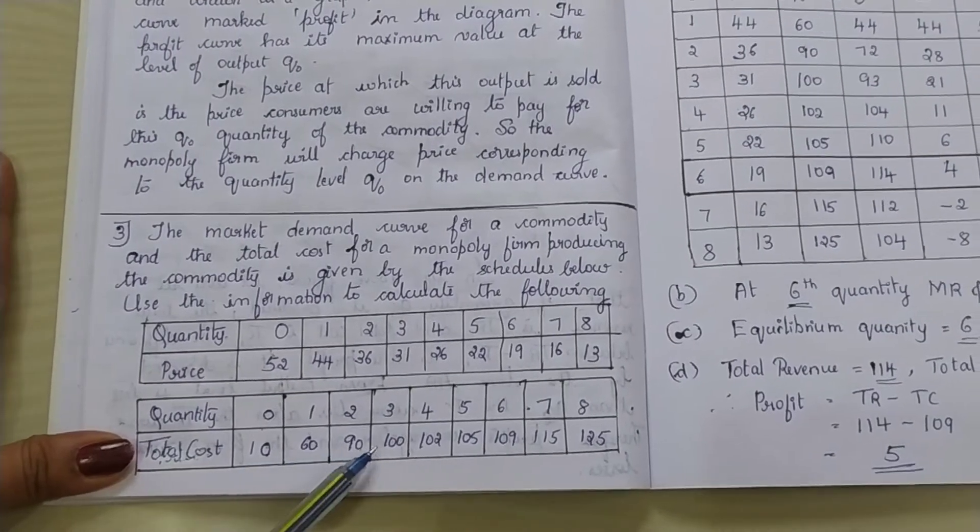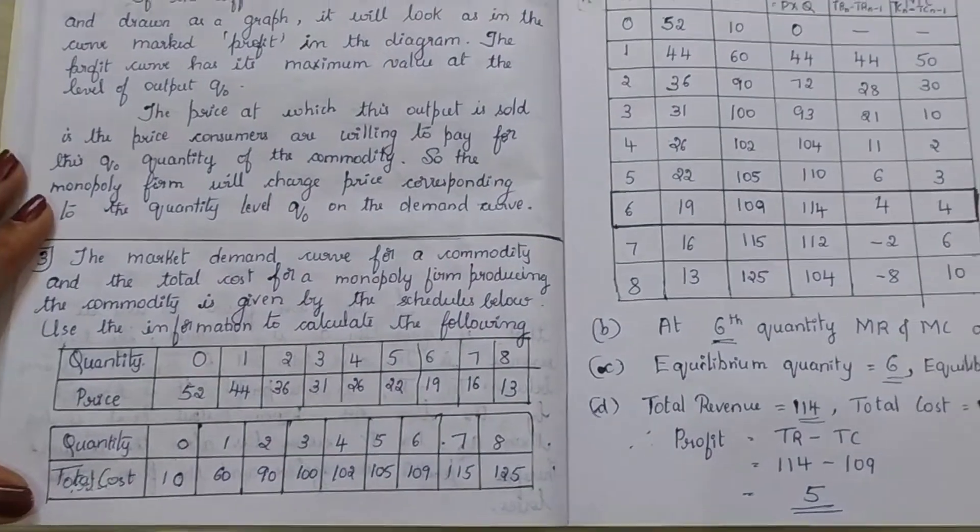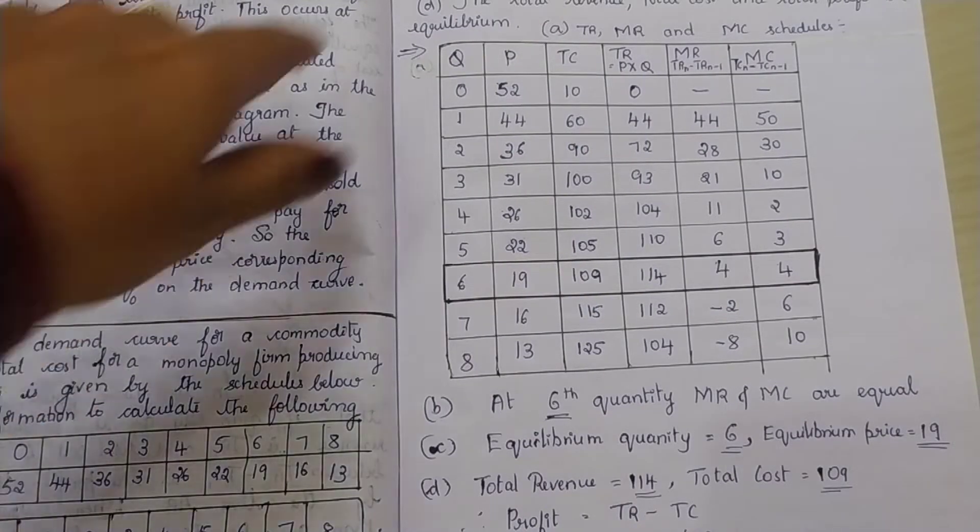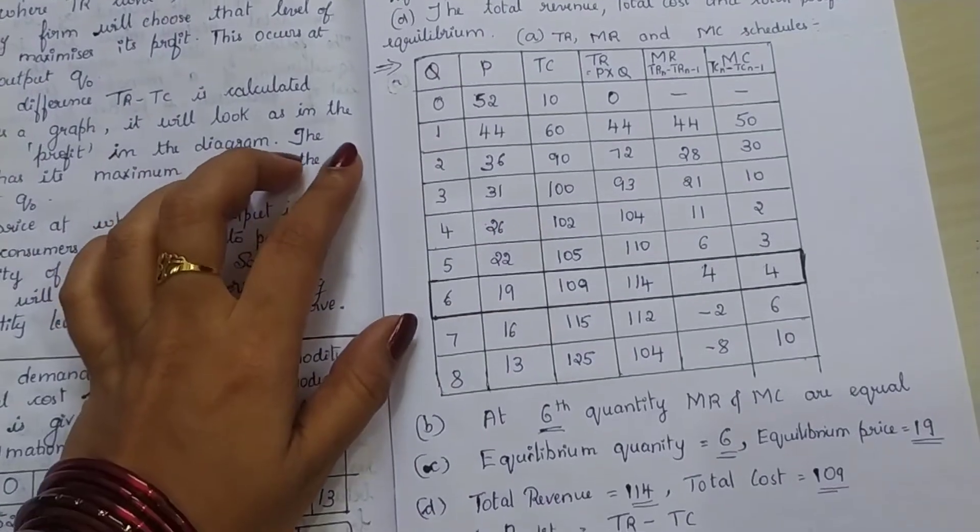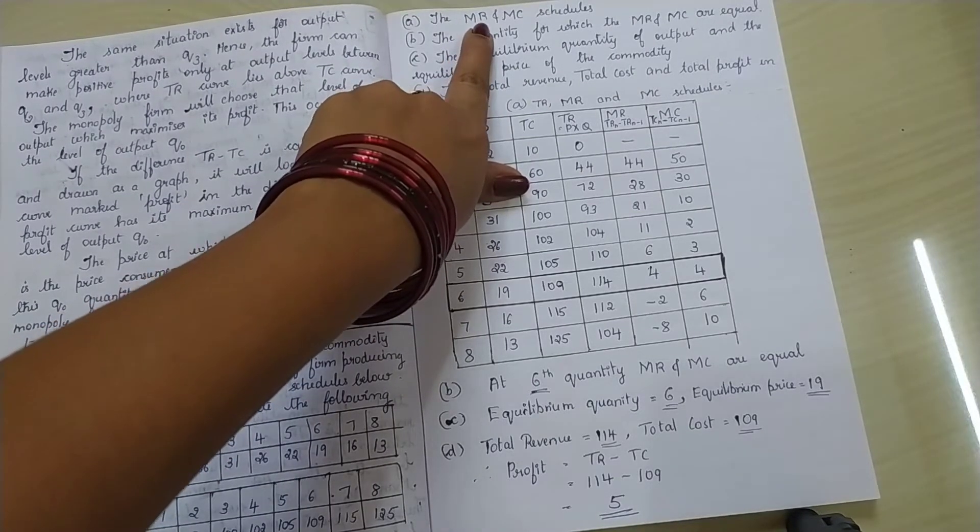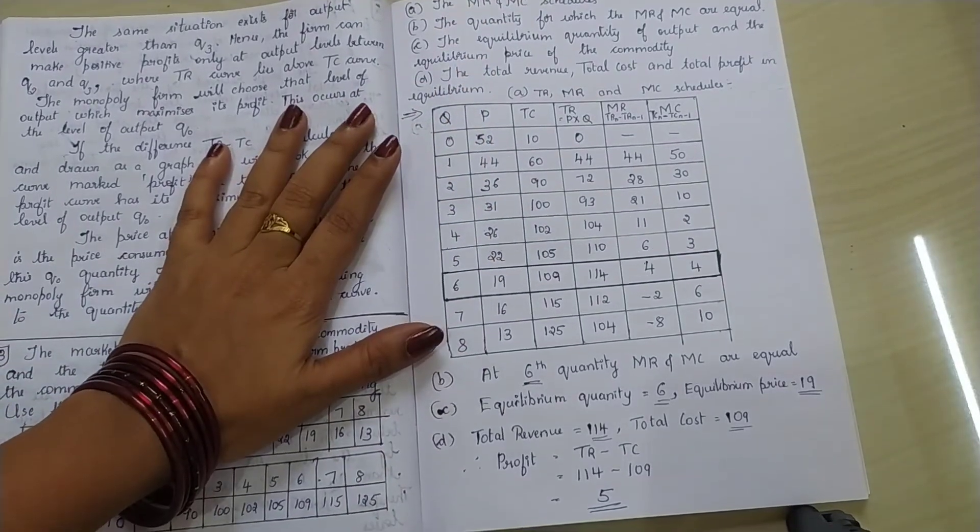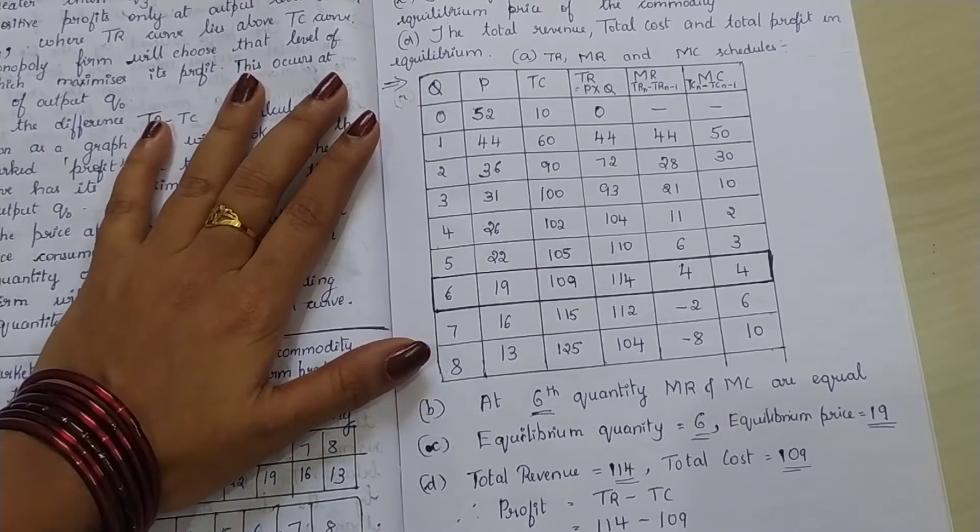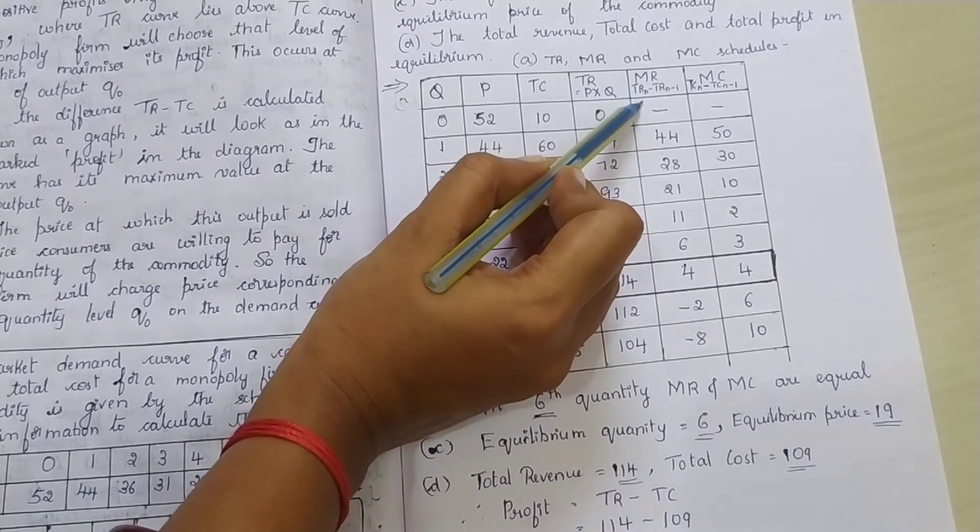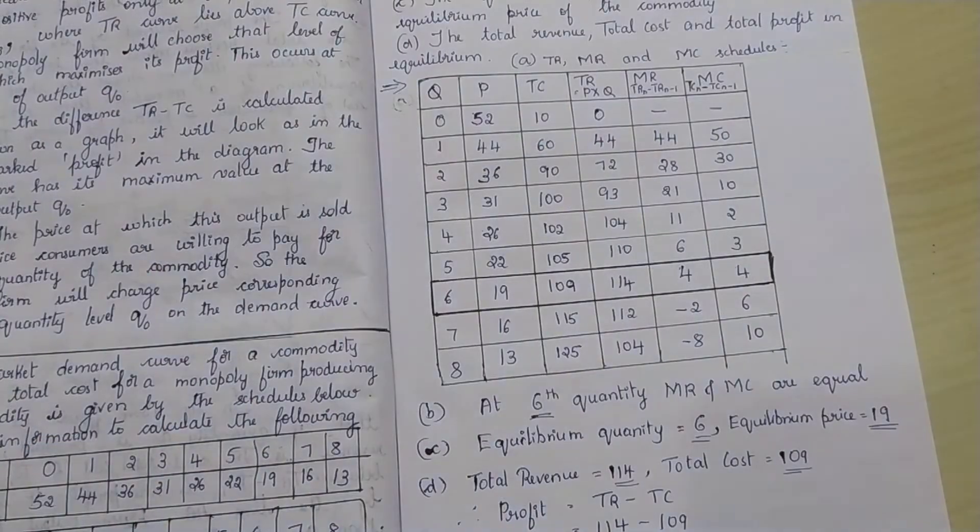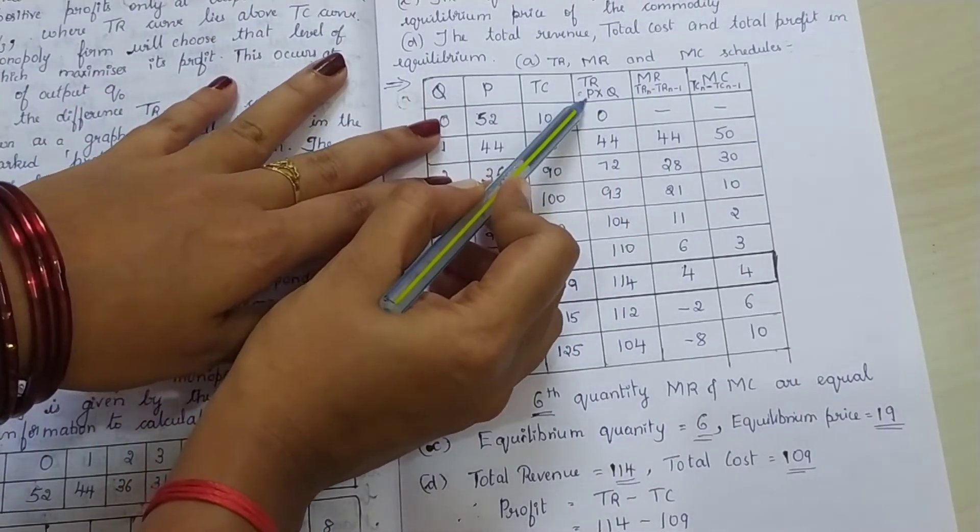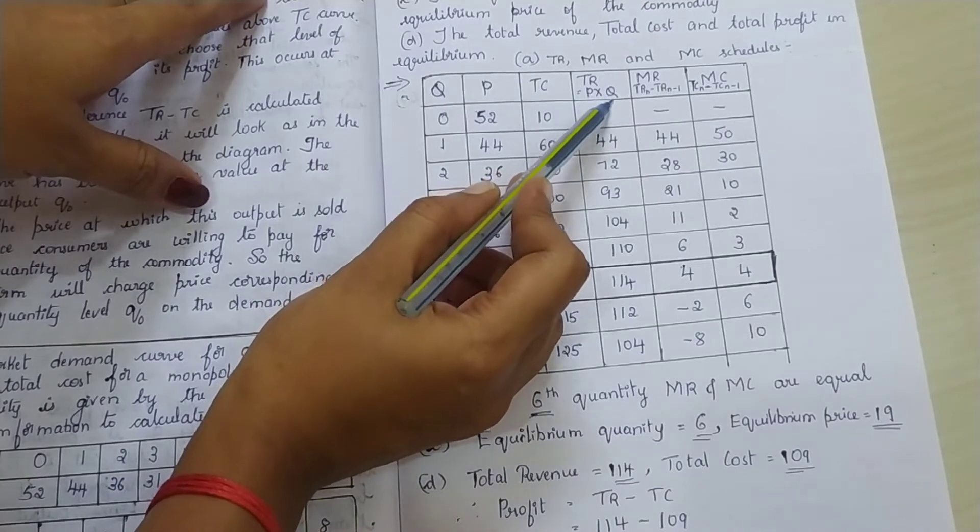Total cost is given: 10, 60, 90, 100, 102, 105, 109, 115 and 125. So, we have written all the values here. Now, what are we supposed to calculate? We are supposed to calculate the marginal revenue and the marginal cost. But if you have to calculate the marginal revenue, you need to calculate the total revenue first. Because, what is the formula to calculate the marginal revenue? TR of nth unit. You have to write the formula. So, that is why we require TR, total revenue. In the fourth column, we are calculating the TR. Total revenue formula is price multiplied by the quantity.